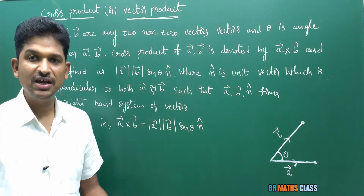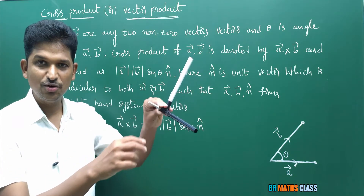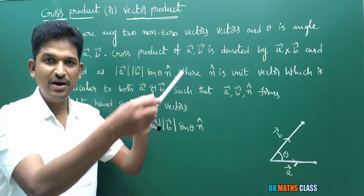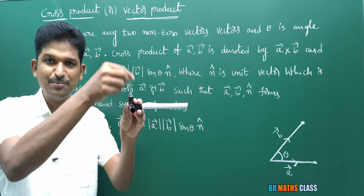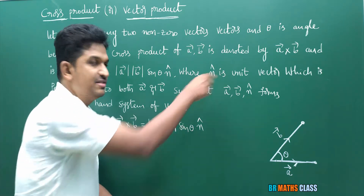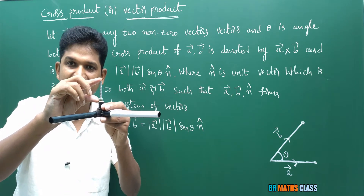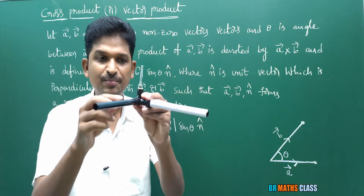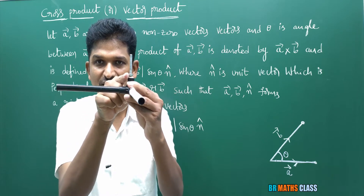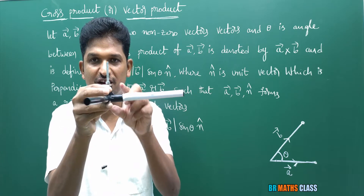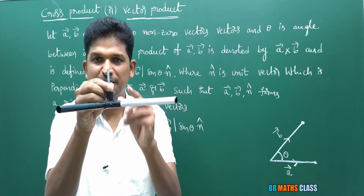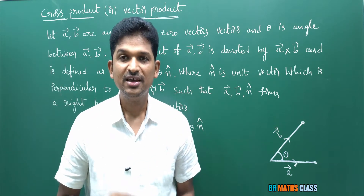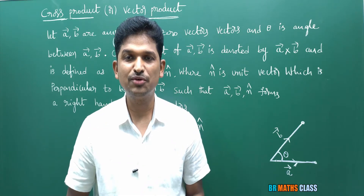To understand this definition, I'll use this physical object to explain. This black color one is a̅, this white color side is b̅. Now what is n̂ — n̂ is a unit vector which is perpendicular to both a̅ and b̅. You can see this is perpendicular to a̅ and at the same time perpendicular to b̅. This is the unit vector perpendicular to both. Such that a̅, b̅, n̂ forms a right-hand system of vectors.